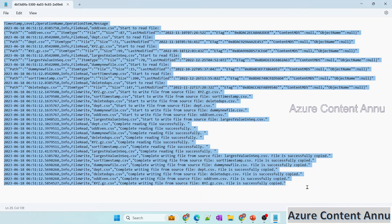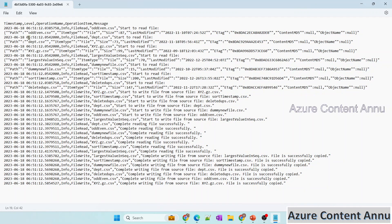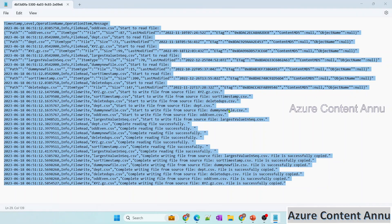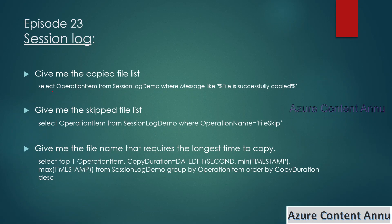You can always go to this session logging file and see every detail. Additionally, you can load this folder data into a SQL table and write SQL queries — for example, get details of all files copied successfully by querying all operation items where the message is like 'file is successfully copied'. Similarly, you can check skipped files where operation name equals file skip, or find which file took the longest time to copy using top 1 ordered by copy duration.